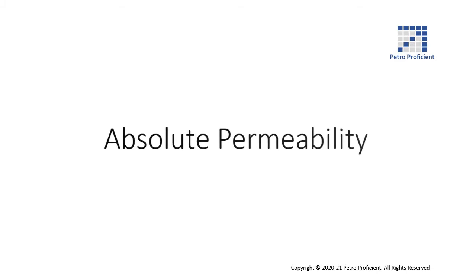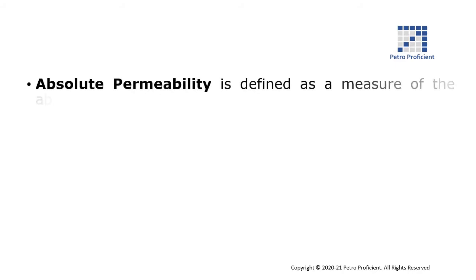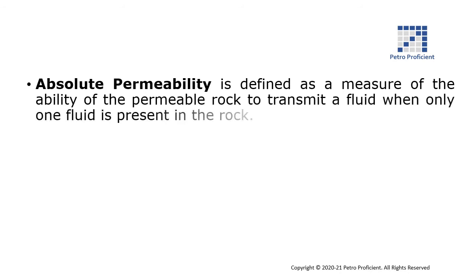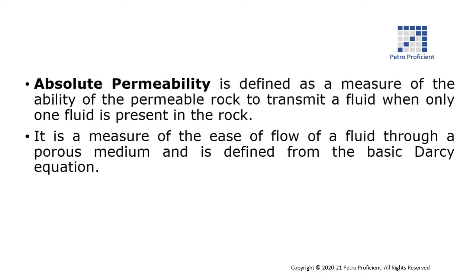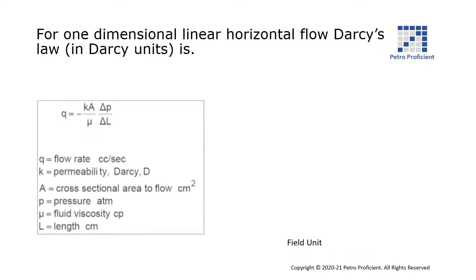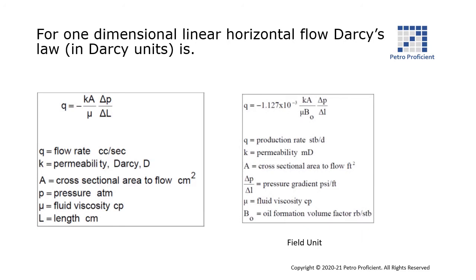Absolute permeability is defined as a measure of the ability of the permeable rock to transmit a fluid when only one fluid is present in the rock. It is a measure of the ease of flow of a fluid through a porous medium and is defined from the basic Darcy equation. For one-dimensional linear horizontal flow, Darcy's law in Darcy units is given by the following equation.